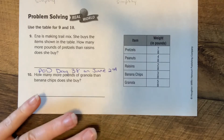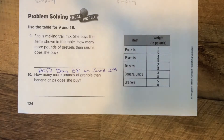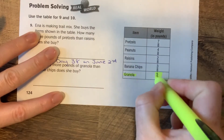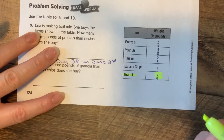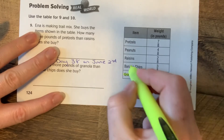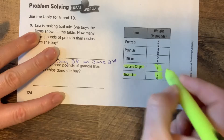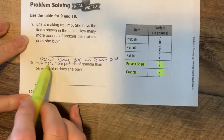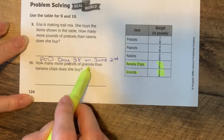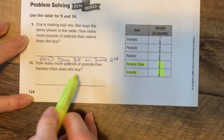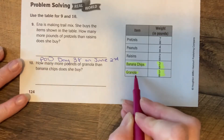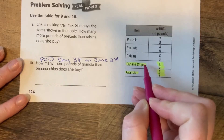She buys 5 eighths pounds of granola — that's how much she bought — and 3 eighths pounds of banana chips. Then, the question is: how many more pounds of granola than banana chips does she buy? So we want to know how many more pounds of granola she buys than banana chips.